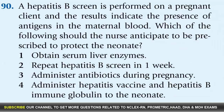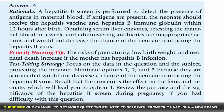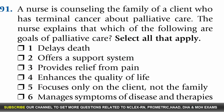Question 90: A hepatitis B screen is performed on a pregnant client and the results indicate the presence of antigens in the maternal blood. Which of the following should the nurse anticipate to be prescribed to protect the neonate? Options: 1. Obtain serum liver enzymes, 2. Repeat hepatitis B screen in one week, 3. Administer antibiotics during pregnancy, 4. Administer hepatitis B vaccine and hepatitis B immune globulin to the neonate. Answer: 4. Rationale: If hepatitis B antigens are present, the neonate should receive the hepatitis B vaccine and hepatitis B immune globulin within 12 hours after birth. Obtaining serum liver enzymes, retesting the maternal blood in a week, and administering antibiotics are inappropriate and would not decrease the chance of the neonate contracting the hepatitis B virus.